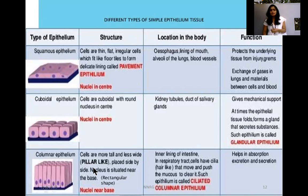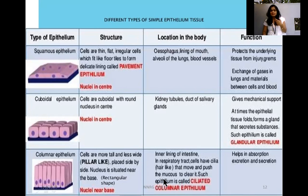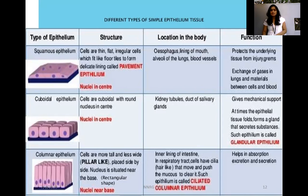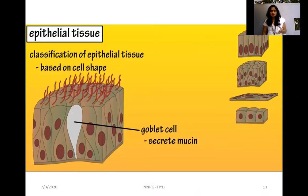Columnar epithelium cells look like pillars or columns, with the nucleus usually present at the base. They are present in the intestinal lining. Some have cilia — thread-like projections on top — which help move particles and push substances forward; these are called ciliated columnar epithelium. The main function of columnar epithelium is absorption, excretion, and secretion.